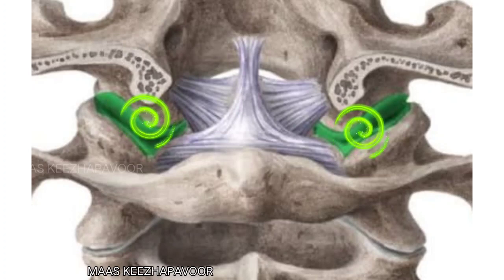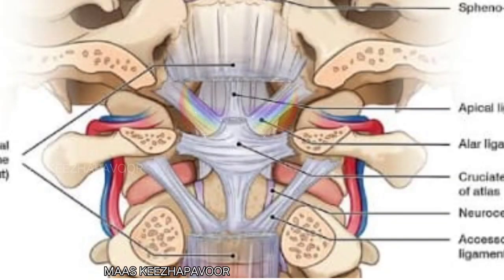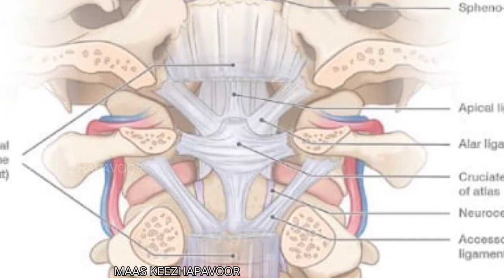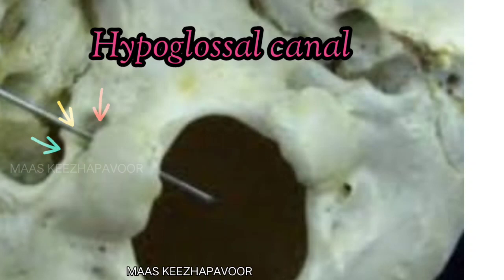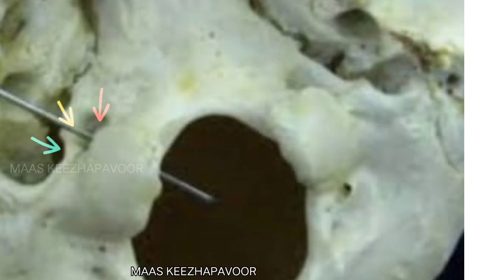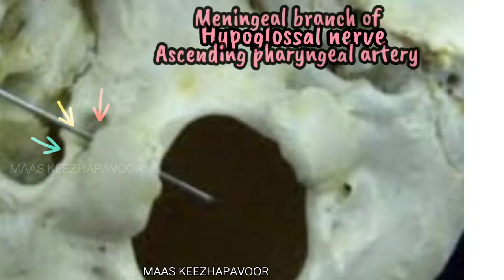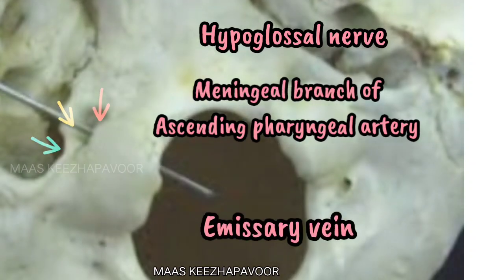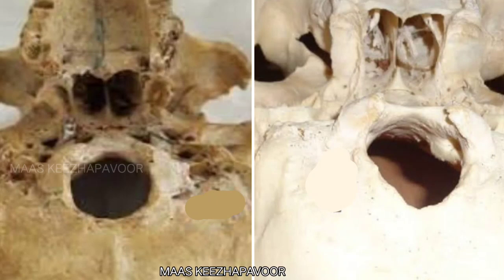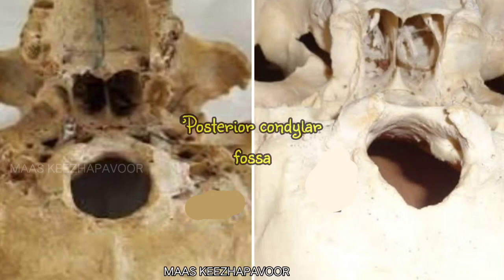The margins of the condyles give attachment to the capsule of the atlanto-occipital joint. The alar ligament is attached to the tubercle on the medial side of the condyle. The hypoglossal canal, or anterior condylar canal, lies above the anterior part of each condyle and transmits the hypoglossal nerve, meningeal branch of ascending pharyngeal artery, and emissary vein.